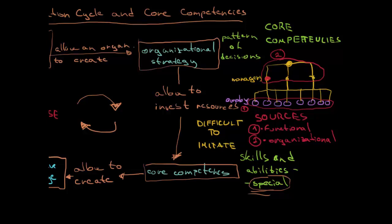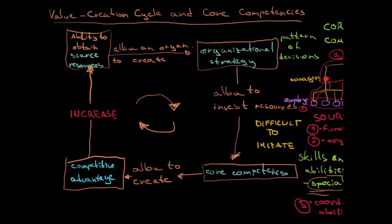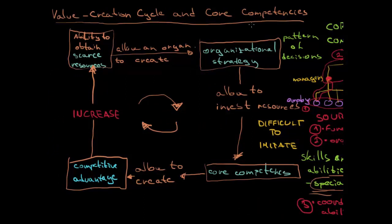The last source is coordination ability — the connecting lines between levels: how we are coordinating, cooperating, and how good we are at that. So to summarize: when you draw the company, you have functional resources from employees, organizational resources from managers, and coordination ability connecting them. This was the video about the value creation cycle and core competencies — hopefully it was helpful.